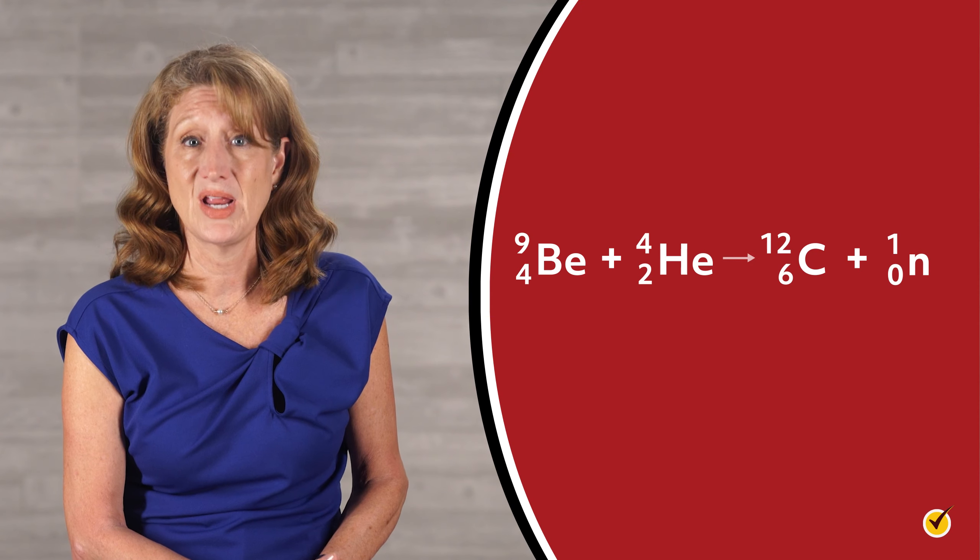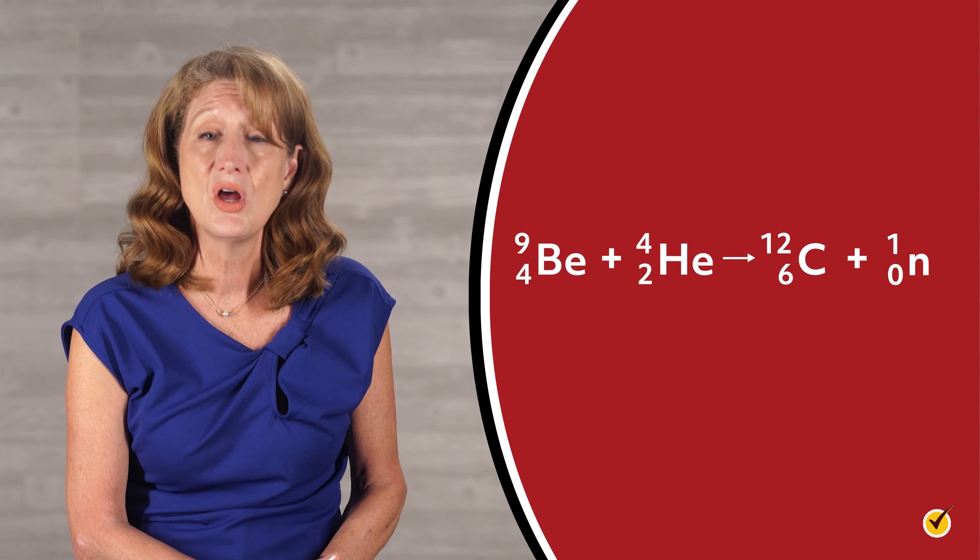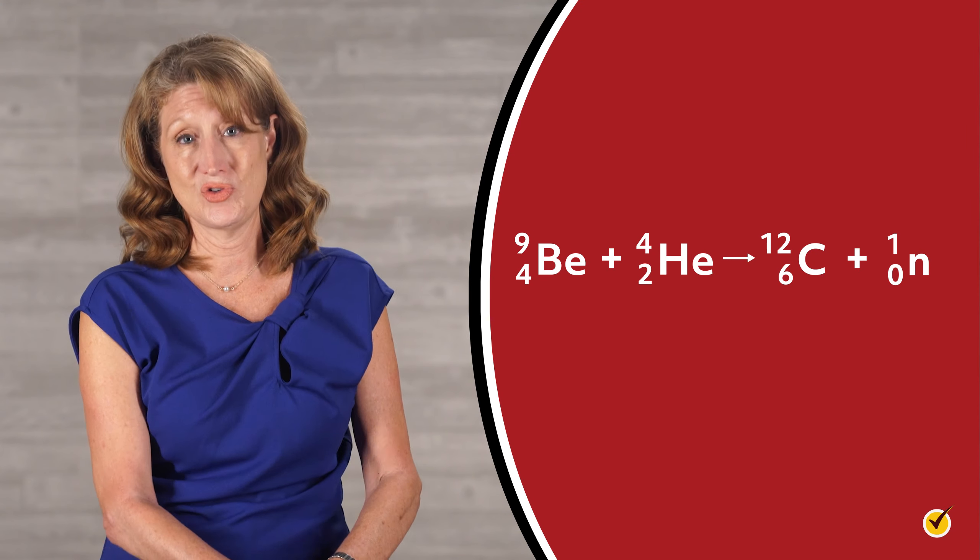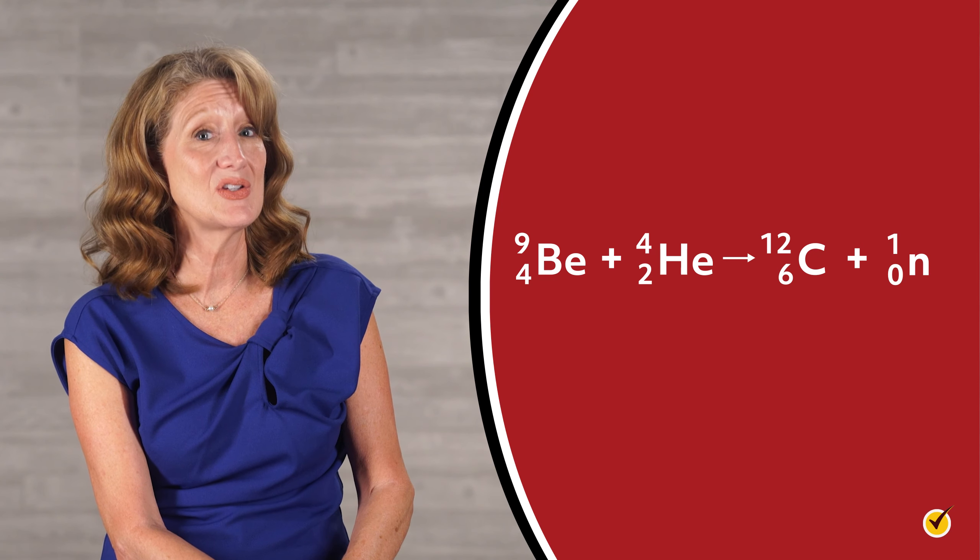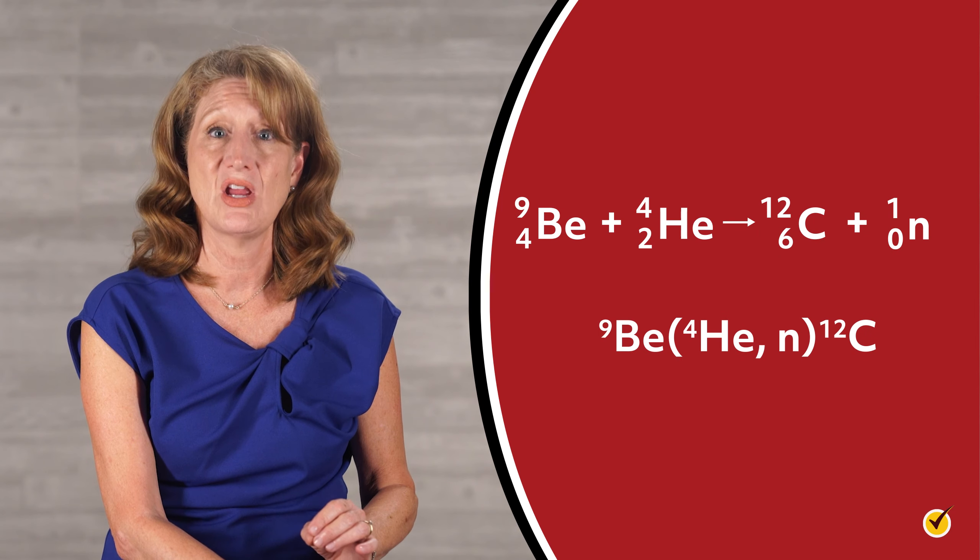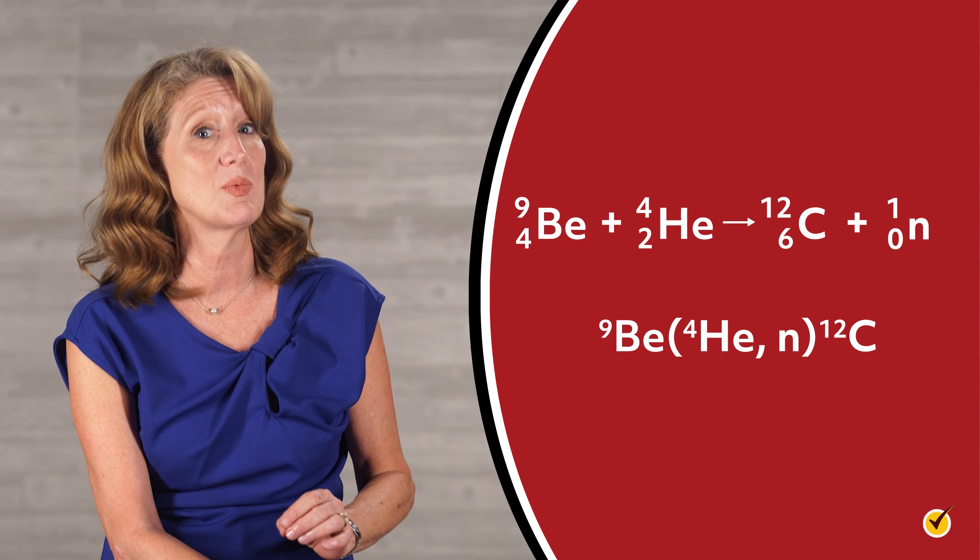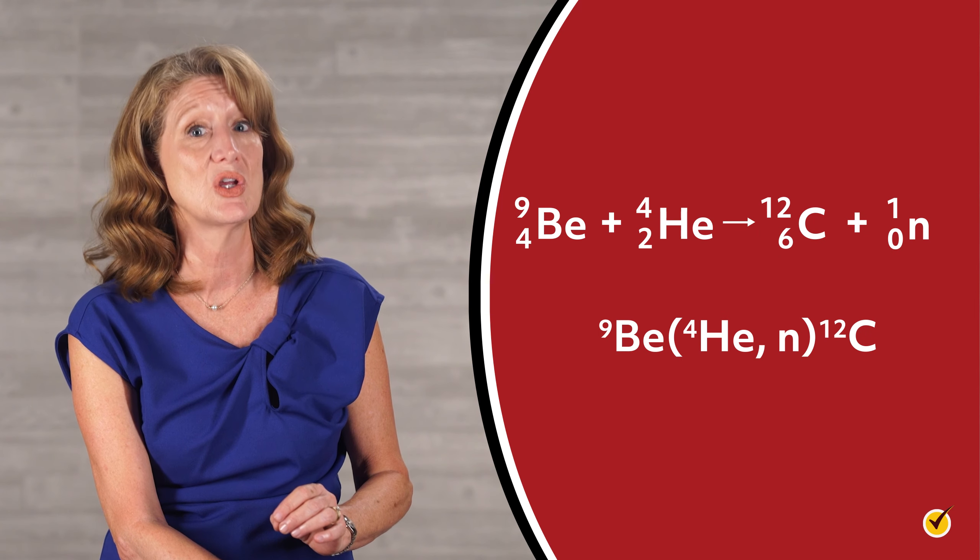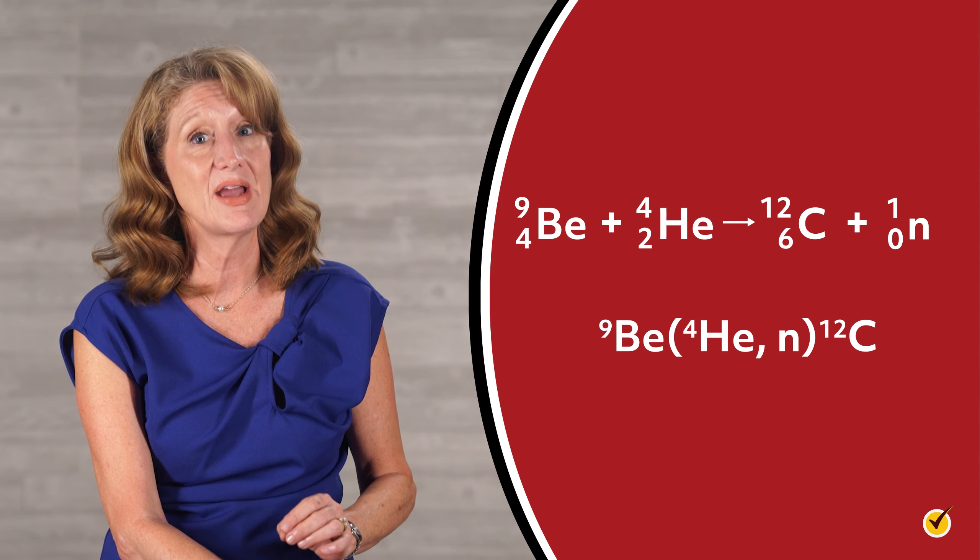Let's consider another example. Beryllium-9 reacts with helium to produce carbon-12 and a neutron. Using the condensed notation, we write this reaction like this, which now includes the information that beryllium was bombarded with high-energy helium particles to produce carbon and high-energy neutrons.